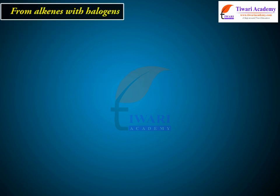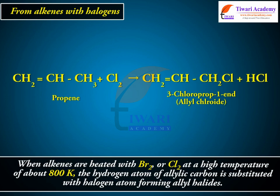From alkenes with halogens: when alkenes are heated with Br2 or Cl2 at a high temperature of about 800 Kelvin, the hydrogen atom of the allylic carbon is substituted with a halogen atom, forming allyl halides.